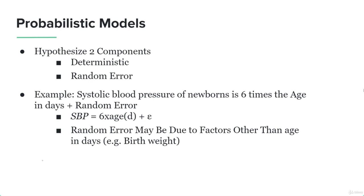Probabilistic models involve both a deterministic and a random error component. Considering this example, apart from the variable of time, we add some random error because there is a possibility it might exist. So in order to hypothesize these two components, we use probabilistic models wherever there is a random error involved. It's important to note that random error can be due to many other factors rather than just days. If we were using any other factor like birth weight, the random error can also exist in that.